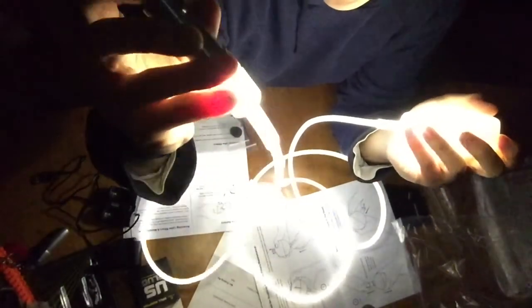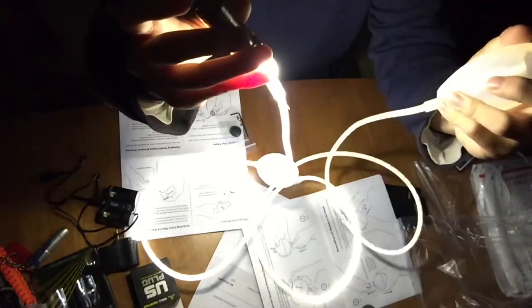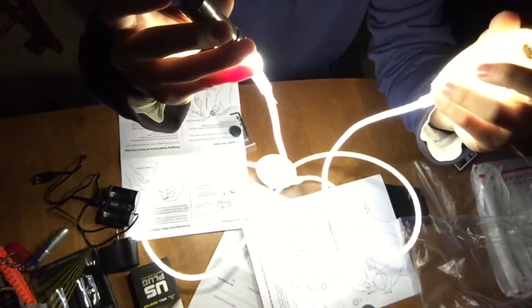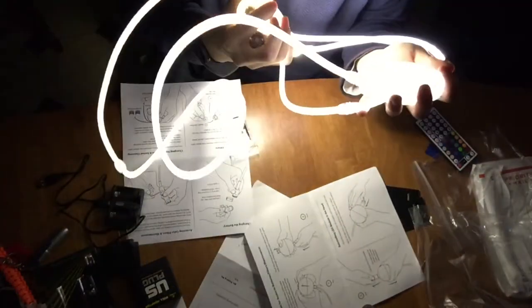So apparently the way you change the brightness on this thing is by tapping it. Oh God, that's so bright. Holy shit. Oh God. Holy shit. That is bright as fuck. There is no light in this room. This is all from the fucking hammer. Holy shit.